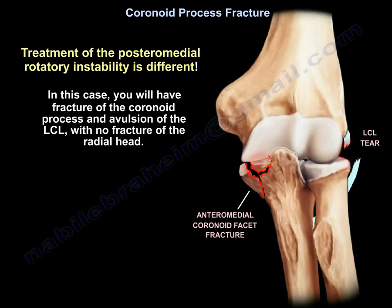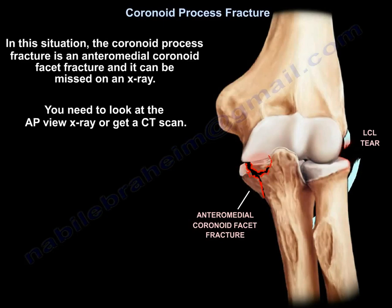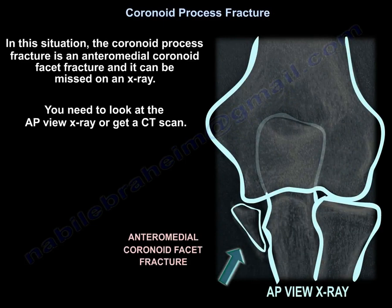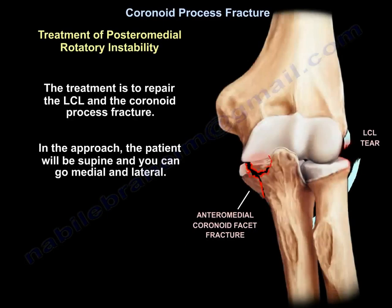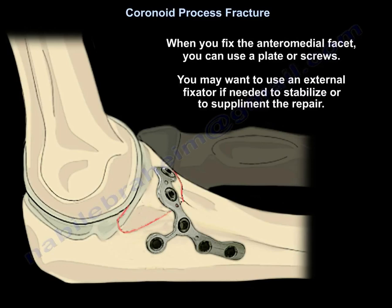Treatment of posteromedial rotatory instability is different. In this case, you will have a fractured coronoid and avulsion of the LCL, with no fracture of the radial head. The coronoid fracture is an anteromedial facet fracture and can be missed on X-ray — you need to look at the AP view or get a CT scan. The treatment is to repair the LCL and the coronoid fracture. The patient will be supine and you can go medial and lateral. You will usually buttress the anteromedial facet and repair the associated lateral collateral ligament injury, which will provide stability to the elbow. When you fix the anteromedial facet, you can use plate or screws, and you may want to use an external fixator if needed to stabilize or supplement the repair.